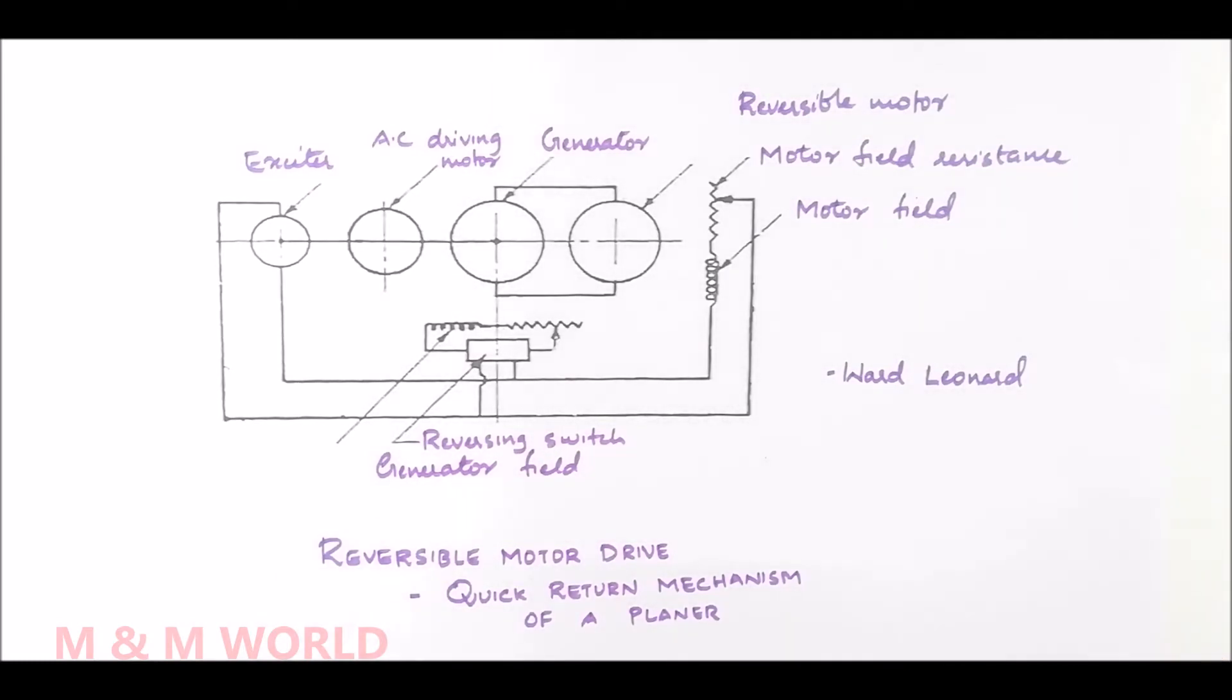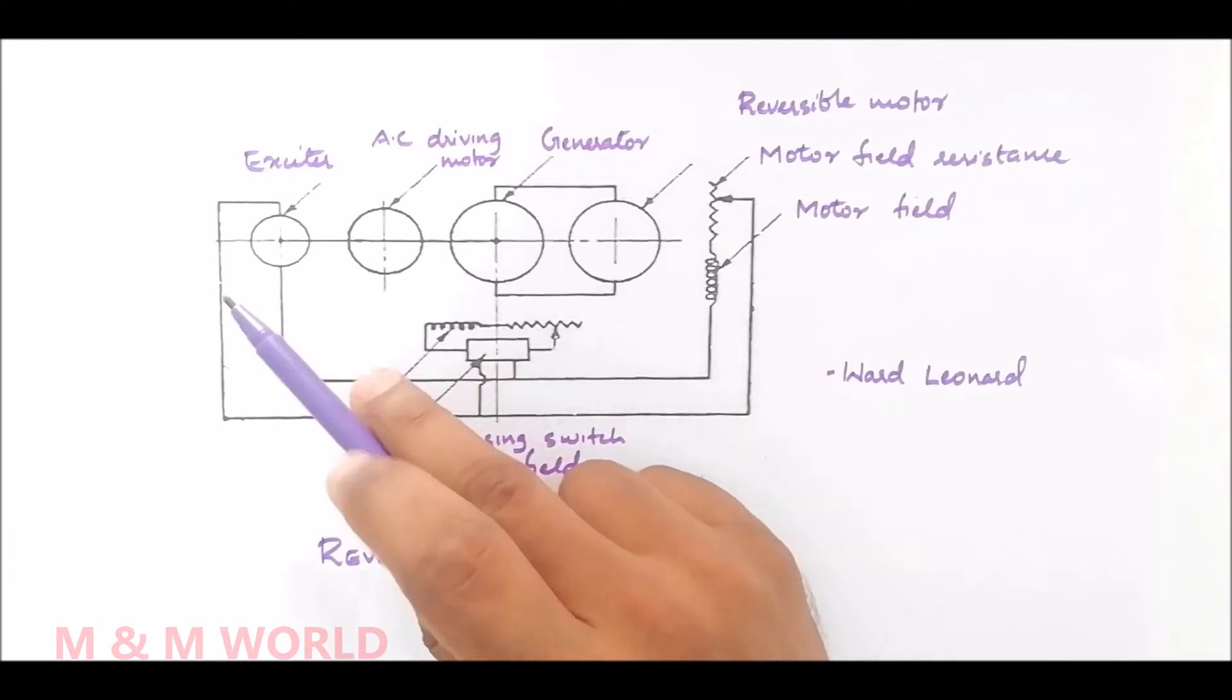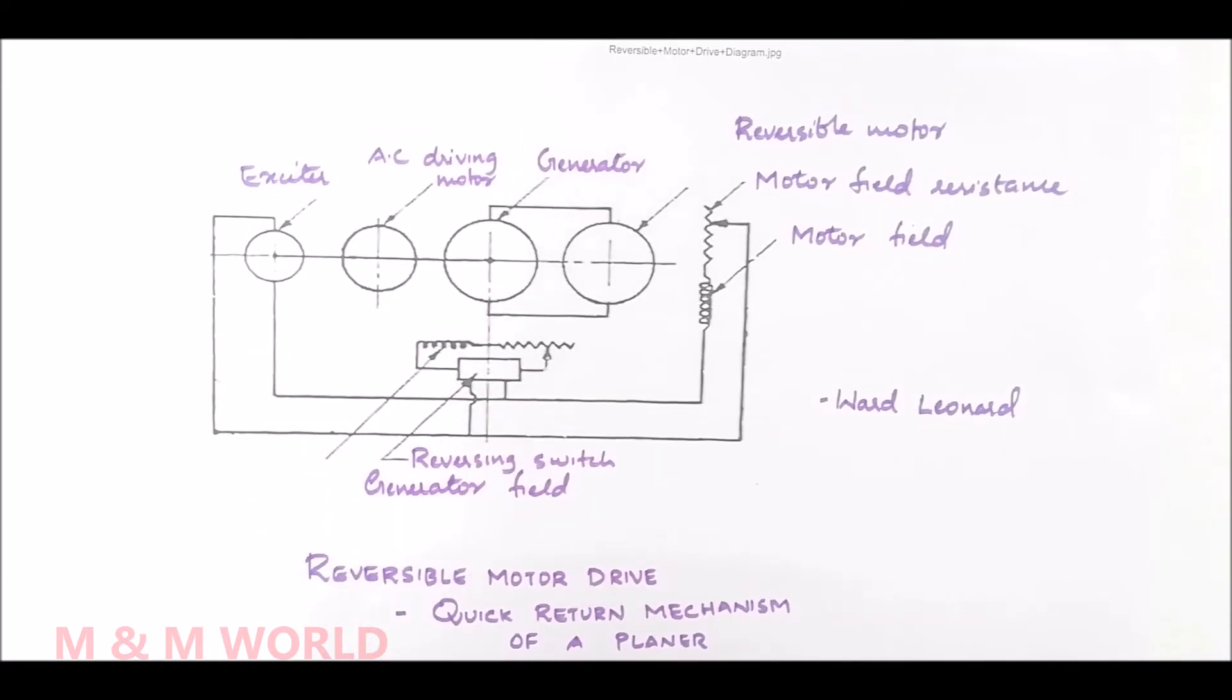The AC driving motor receives power from the AC mains. And this AC motor is coupled with DC generator and the exciter on the same shaft.